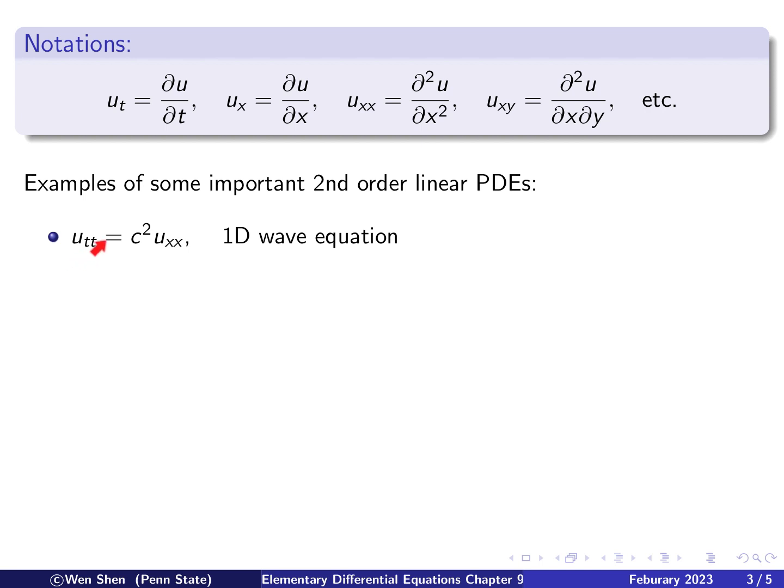u_tt, so twice partial derivative in t equals a constant c squared times u_xx twice partial derivative in x. So this is an equation that lives in 1D, one-dimensional space, and it depends also on the time t. So this is called the 1D wave equation.